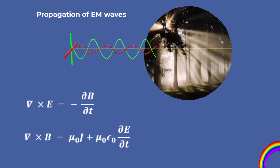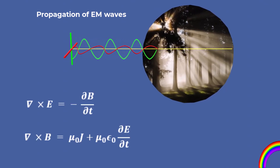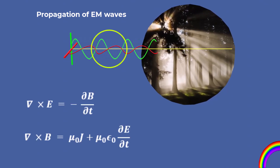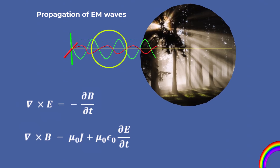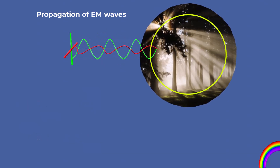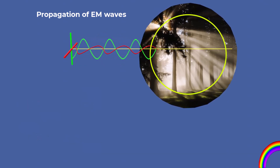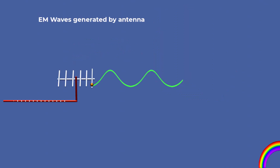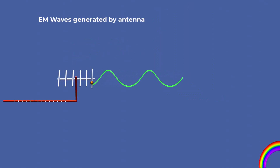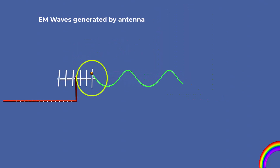Maxwell's equations predicted that these waves would move at the speed of light, confirming that light itself is an electromagnetic wave. The simplest source of EM waves is an accelerating electric charge.